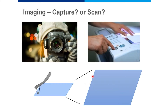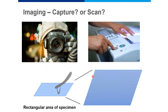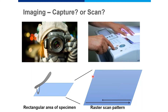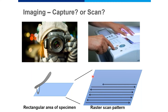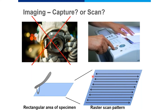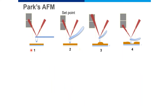The question is: does the AFM just take a photograph using the cantilever, or does it actually scan the sample? The answer is that the tip actually goes back and forth over a rectangular area in something called a raster scan pattern, generating an image of that entire area of the sample. The AFM physically scans the sample to generate an image.